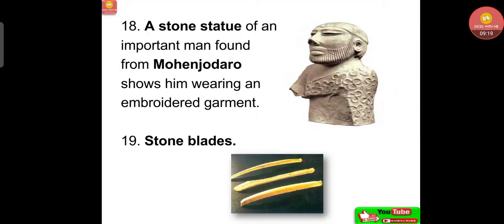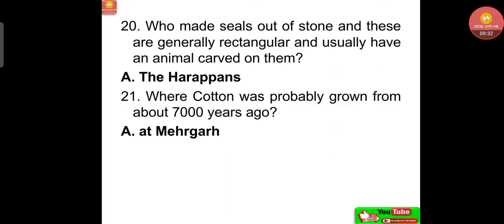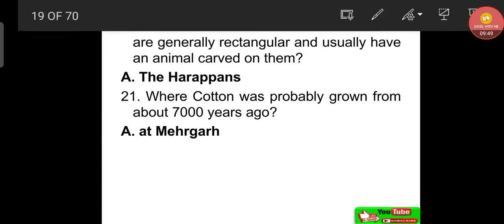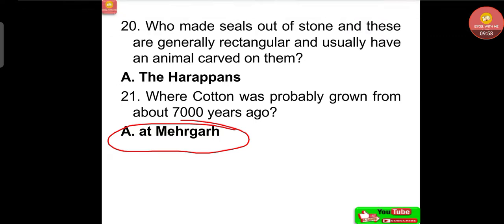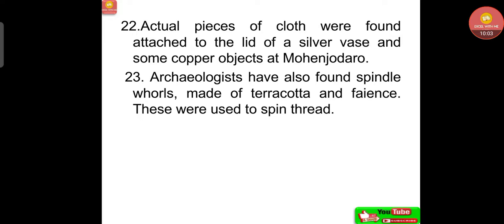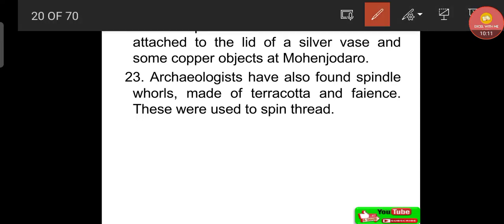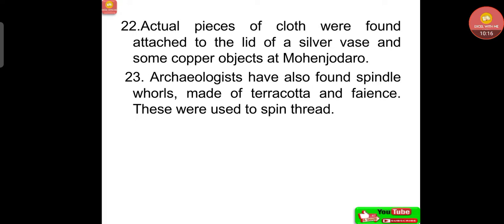A stone statue of an important man found from Mohenjo Daro shows him wearing an embroidered garment with bearded hair. Stone blades were also found. The Harappans made seals out of stone — these are generally rectangular and usually have an animal carved on them. Cotton was probably grown from about 7000 years ago at Mehergarh — a very important point. Actual pieces of cloth were found attached to the lid of a silver vase and some copper objects at Mohenjo Daro. Archaeologists also found spindle whorls made of terracotta and faience, which were used to spin thread.